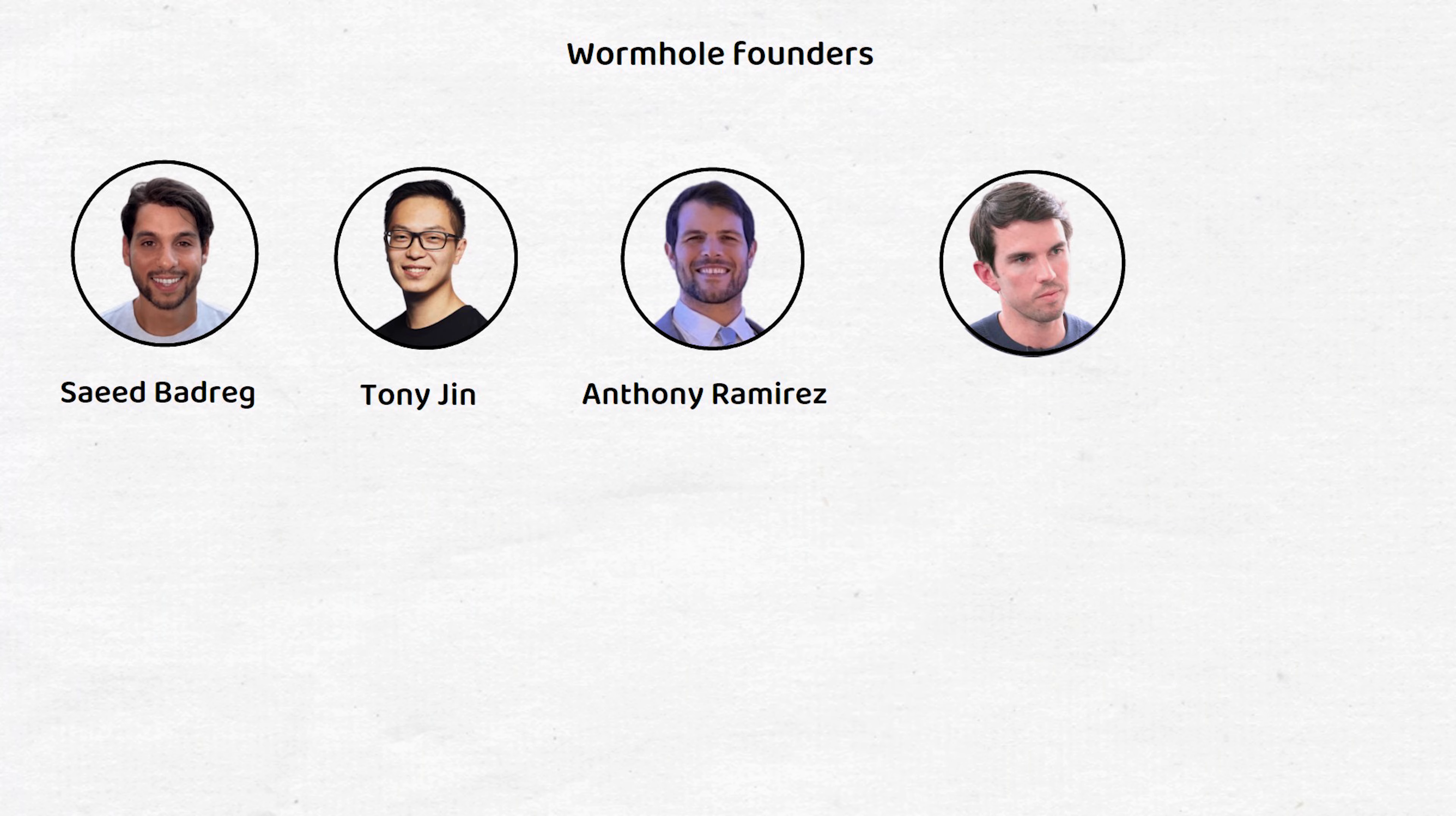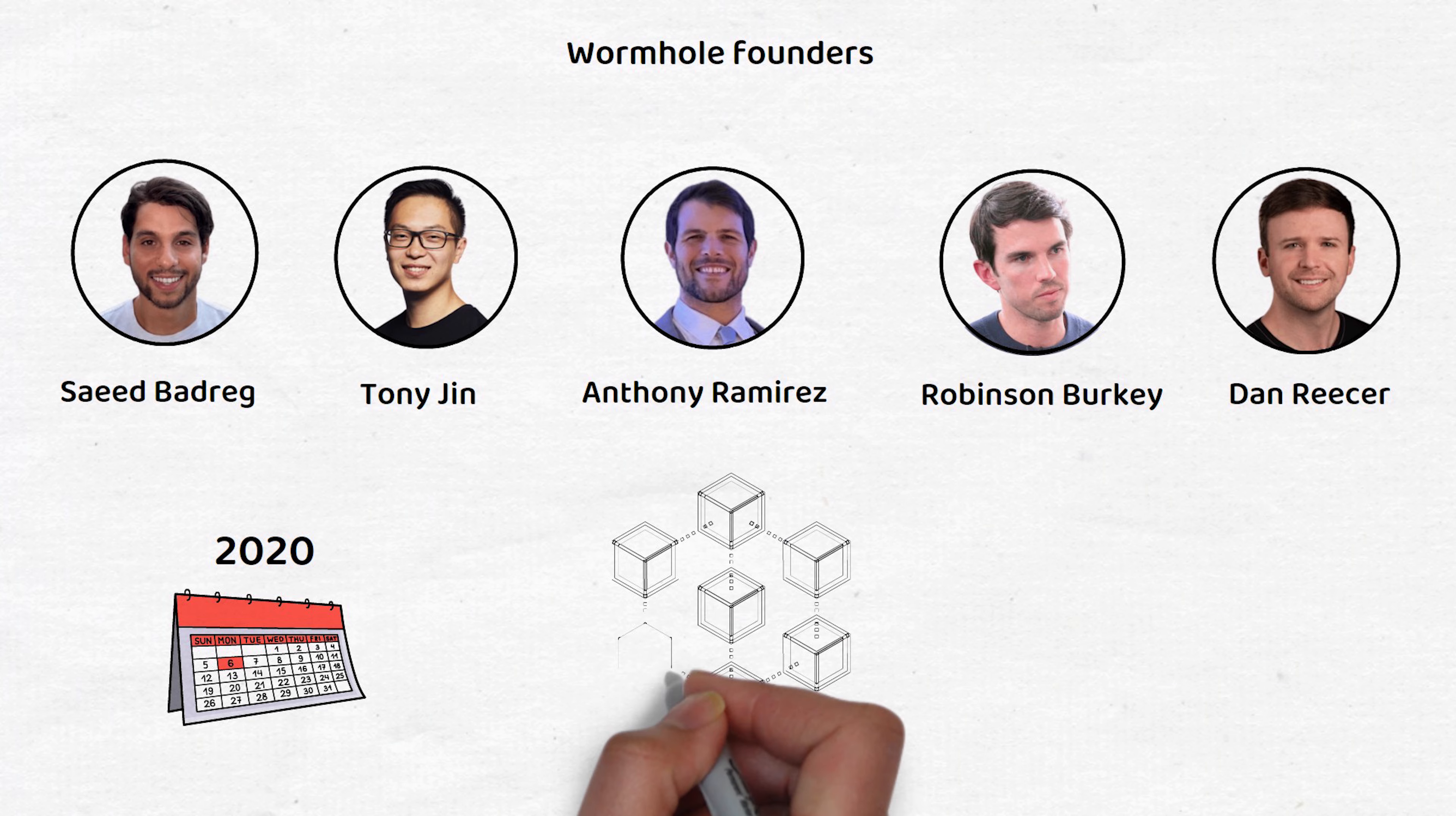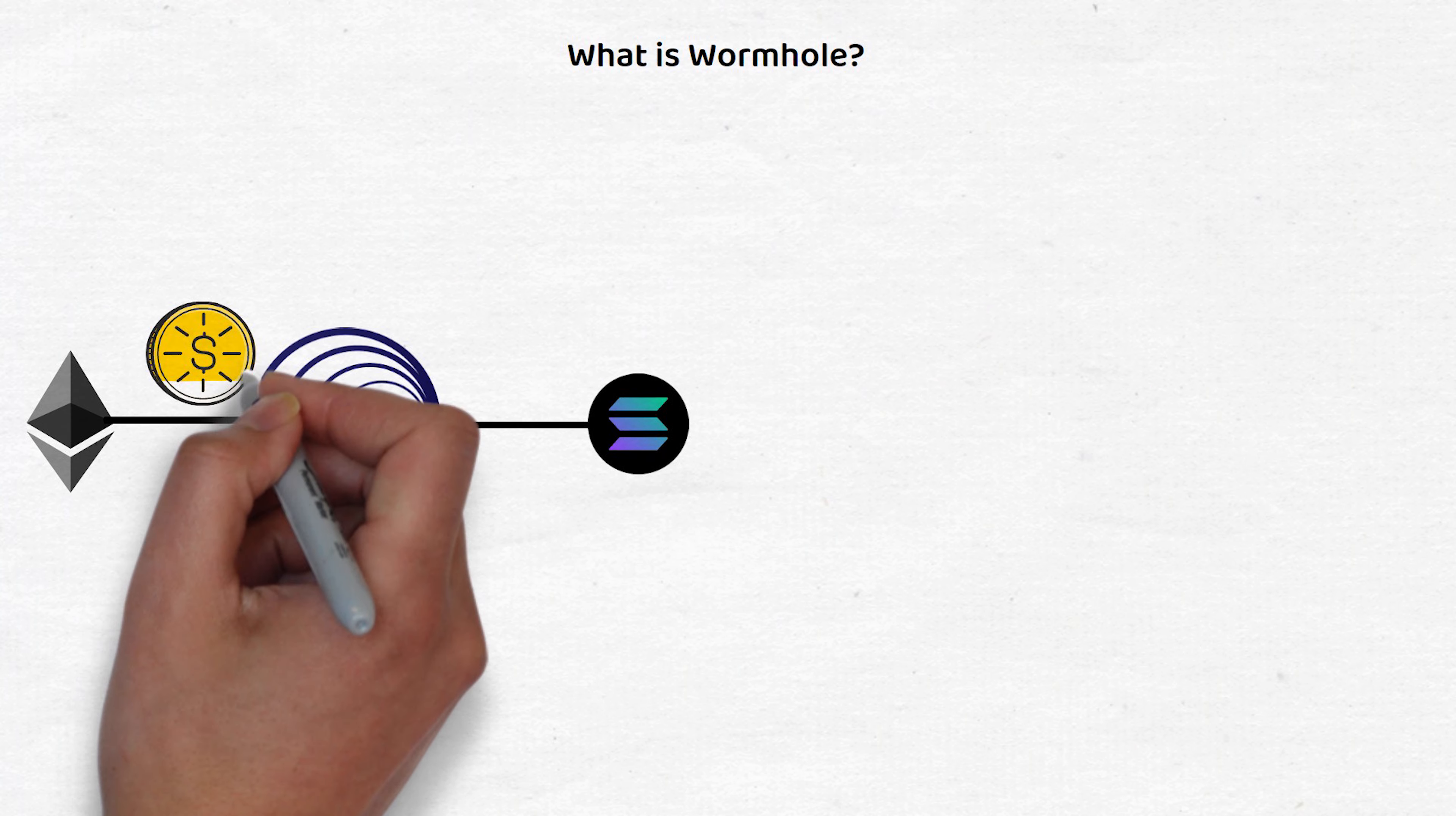Founded by Said, Tony, Anthony Robinson, and Dan in 2020, Wormhole is a general message passing protocol that enables different blockchains to communicate together. In the beginning, Wormhole was a simple token bridge between Solana and Ethereum.